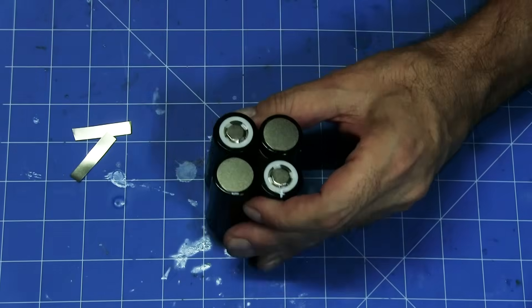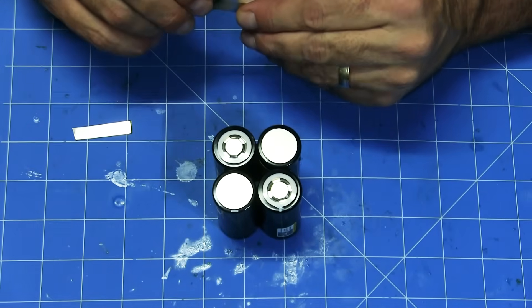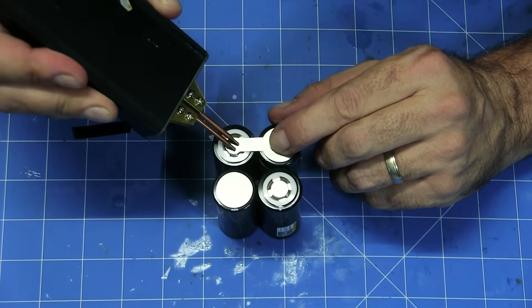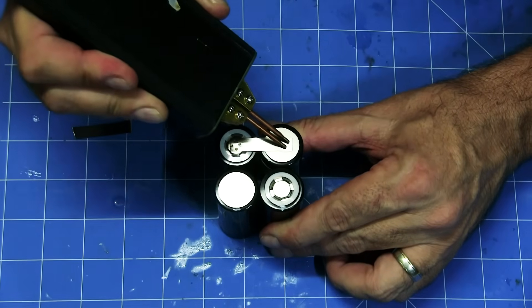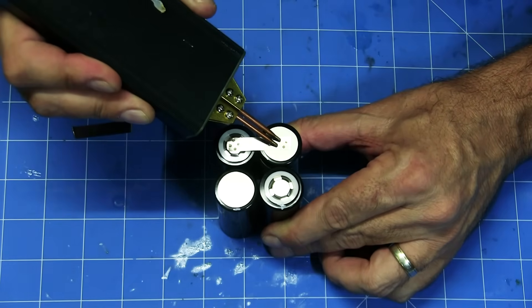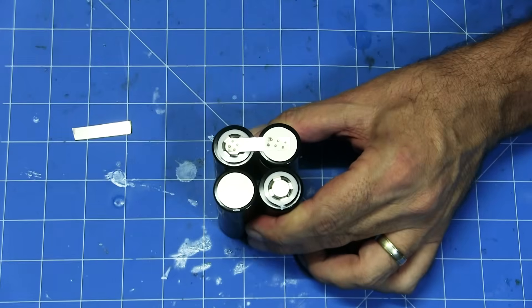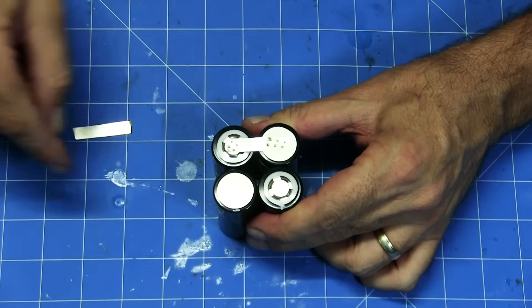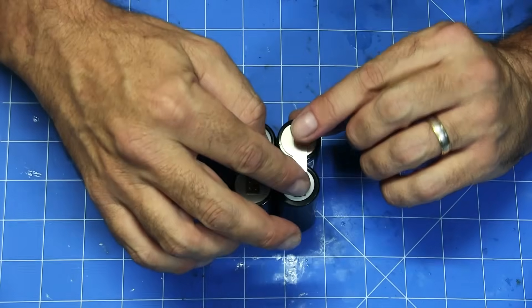We'll then flip it back over to its original configuration, keeping the positive and negative that we marked in the same spot. We'll now do our next nickel plate across the top here. Again, check that the nickel plating has securely spot welded to both batteries. So next our current will go down and we will flip the battery back over and put the last nickel plate on the positive and negative of the third and fourth cell.